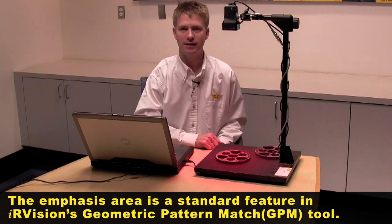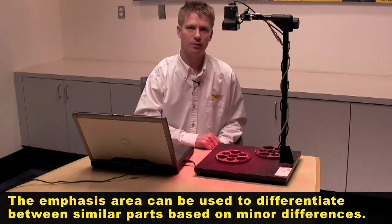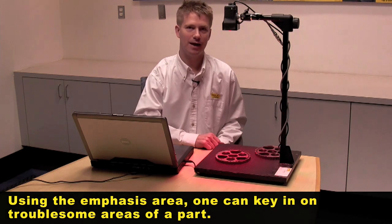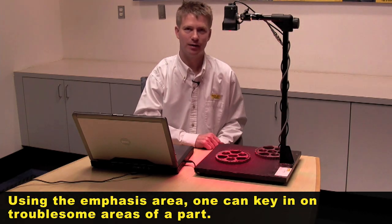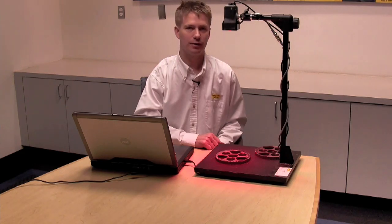The emphasis area is ideal if you want to differentiate between parts based on small features. It's also ideal if you want to key in on troublesome features. For example, a tab. You can emphasize that tab and if the tab is bent or missing, IR Vision will reject the part.